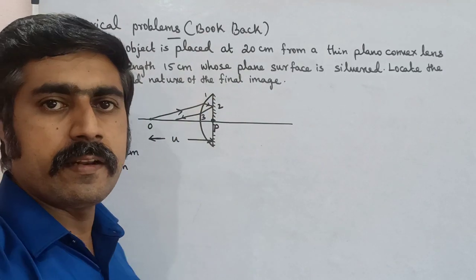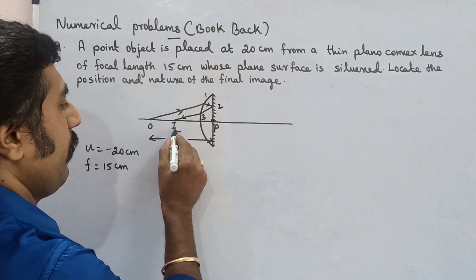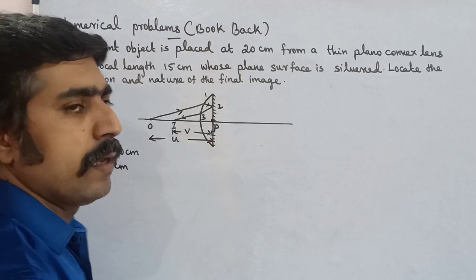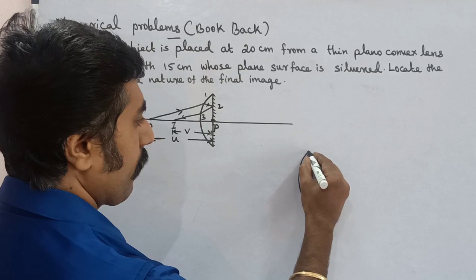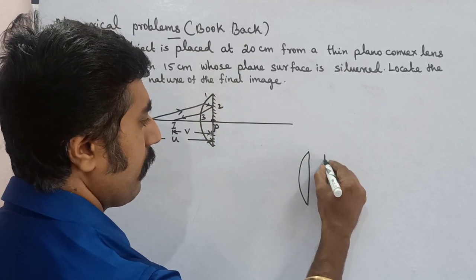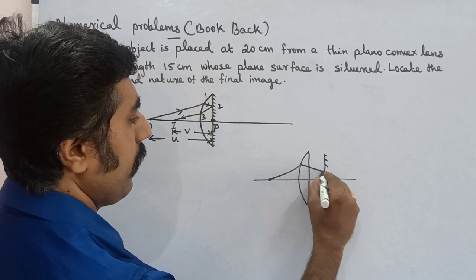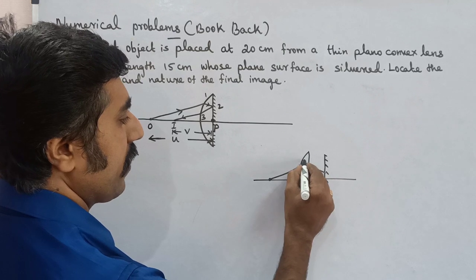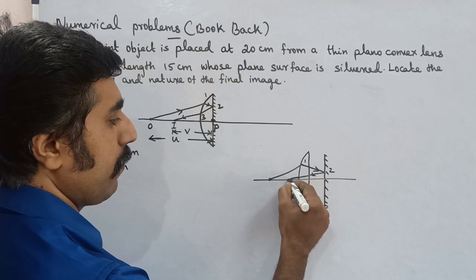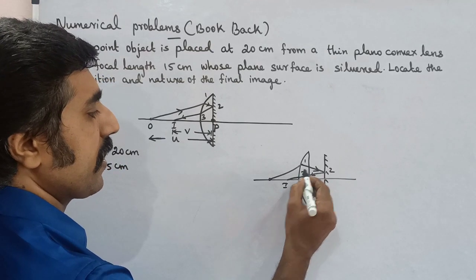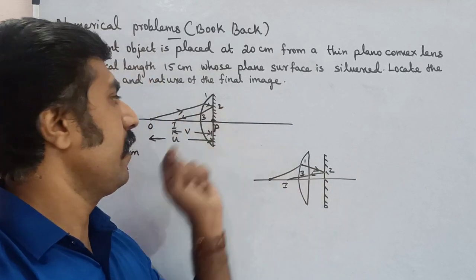1 and 3 are refracting surfaces, and 2 is the reflecting surface. The light ray undergoes refraction at the first surface, then reflection at the silvered surface, and refraction again at the third surface. So 1 and 3 are refracting, and 2 is the reflecting surface.